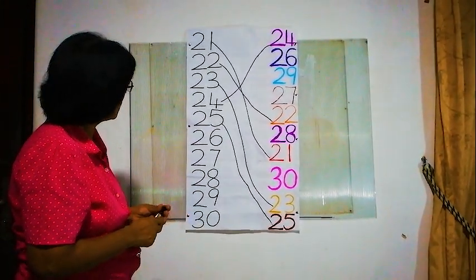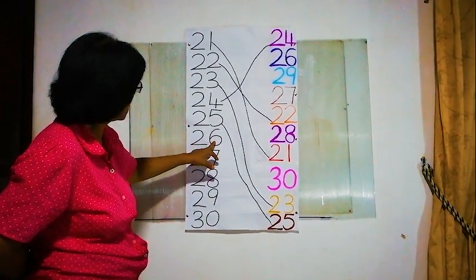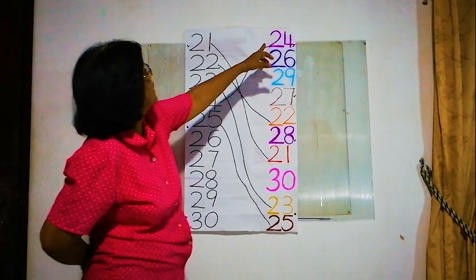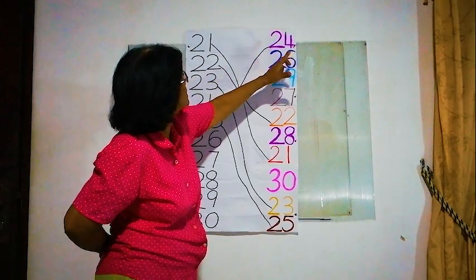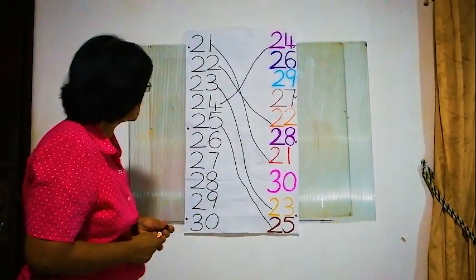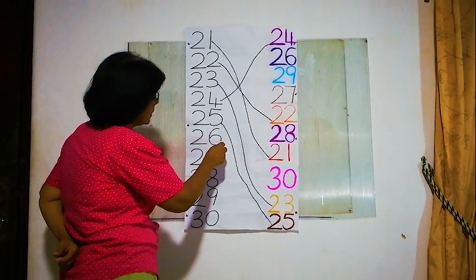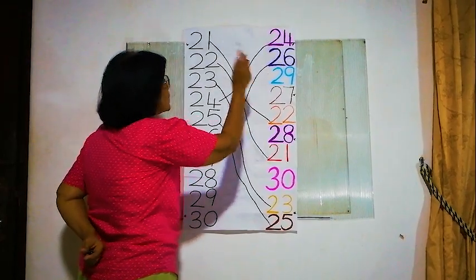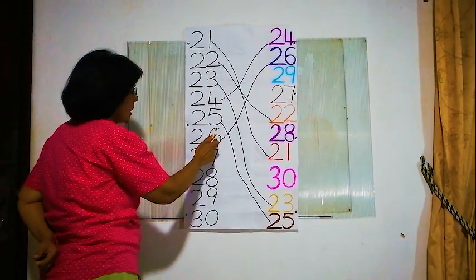Now the next number: 26. Where is 26? 24 is finished. Here — 26! This is the number we are searching. We match 26 and 26.